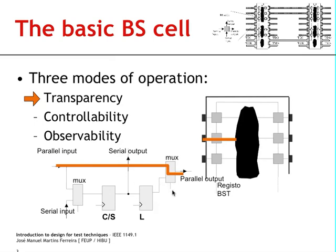This is the regular circuit operating mode. You can, however, set the cells to the so-called control mode or test mode by switching the right multiplexer to its lower input. If you do so, you will isolate the parallel input from the parallel output. This means you have isolated the pin from the core logic, and this will happen in every pin of the circuit, regardless of being an input pin or an output pin.